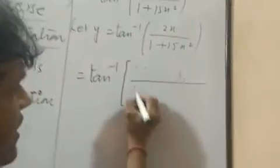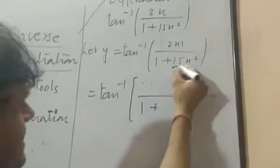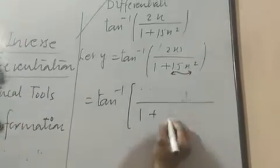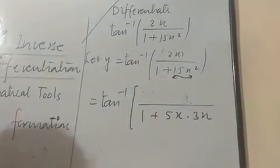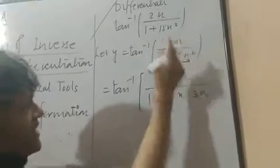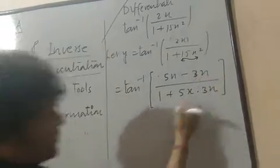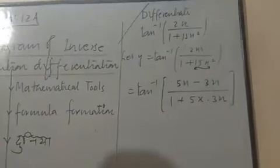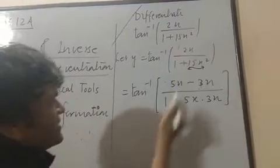Tan inverse. First of all, you will not write your numerator. You will set your denominator. 15x square, you can write as 5x into 3x. This is corner setting. First of all, this corner you will adjust. After that, numerator you will adjust.